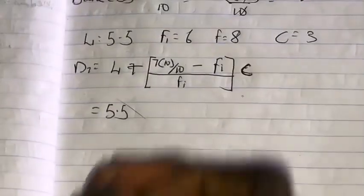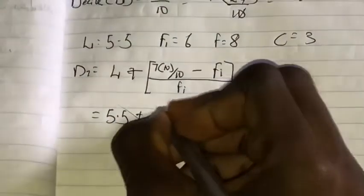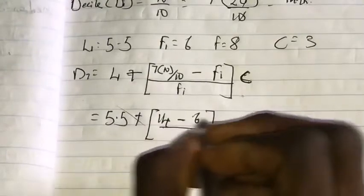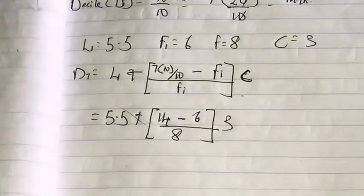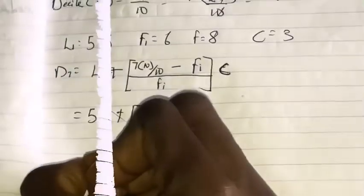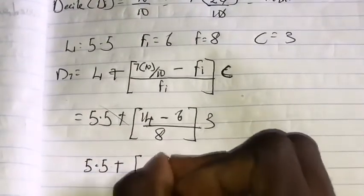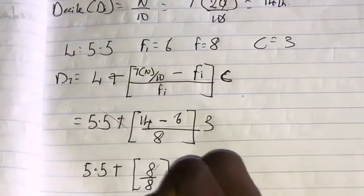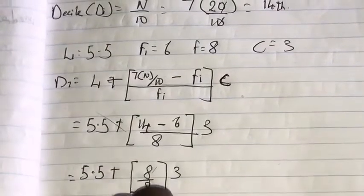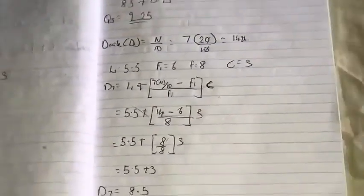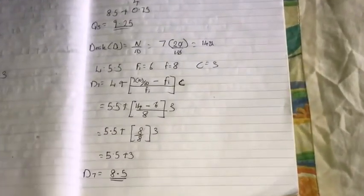Back to this, then plus the sum of this is 14, 14 minus the cumulative frequency before, which is 6, then the frequency for this is 8, then we put 3 here. Therefore we have 5.5 plus, this is 8 over 8, so they cancel out each other, therefore 5.5 plus 3, which is our seventh decile, is 8.5.